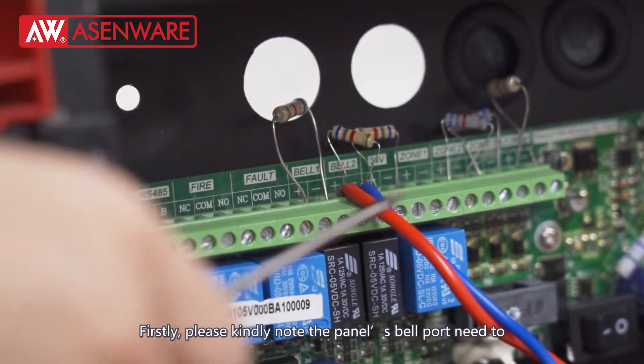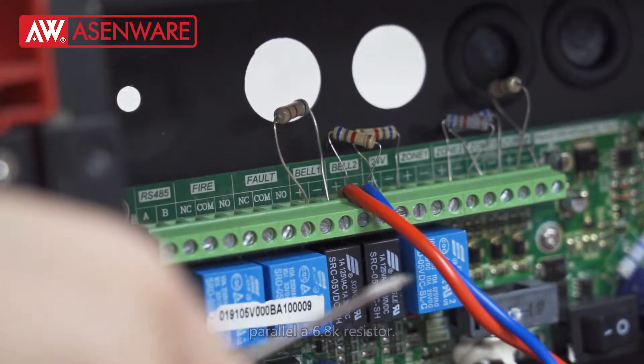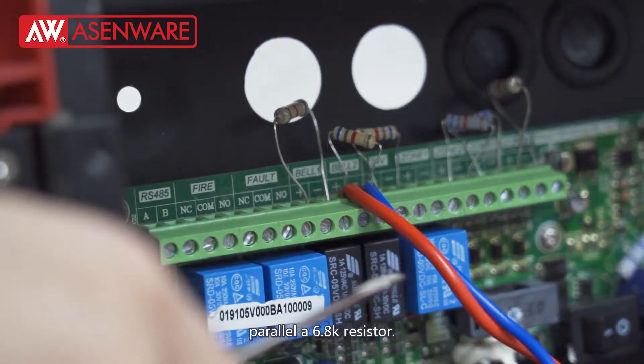Firstly, please kindly note that the panel's bell port needs to parallel a 6.8K resistor.